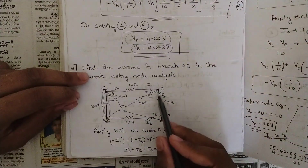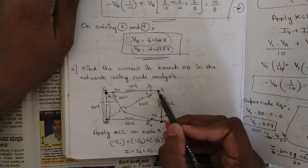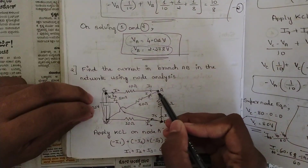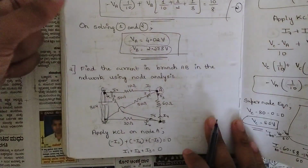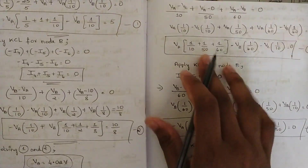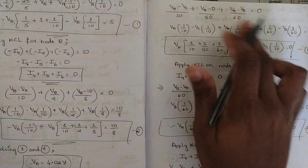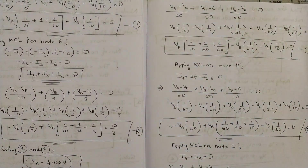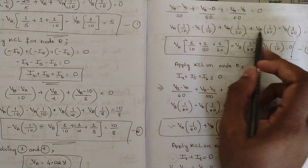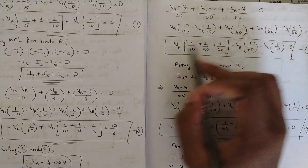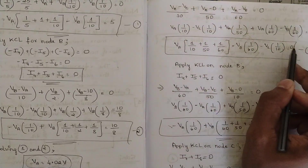Apply KCL on node A: I1 + I2 + I3 = 0. Find the value of I1, which is (Va - Vc) / 10. Find I2 and I3 similarly, solve the equation, separate all voltages, group the coefficients of Va, Vb, and Vc, and name it as Equation 1.